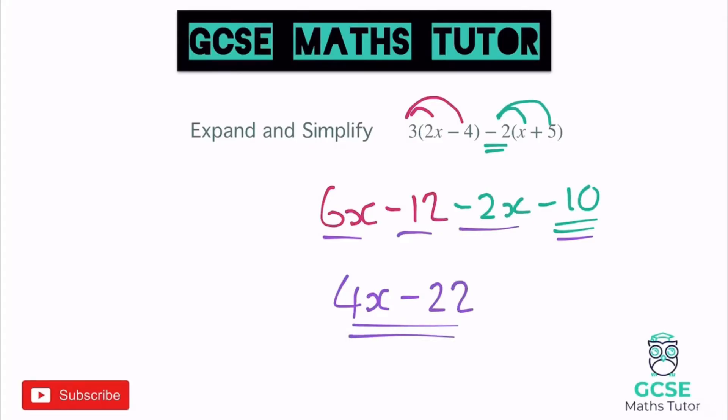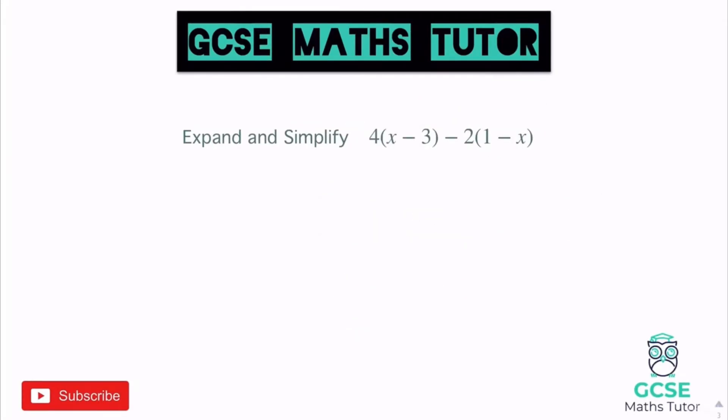Let's have a look at one more before we have a go. This one here we've got it a little bit jumbled up. It's a little bit different to the last few but let's just follow the exact same process and see what we get. First bracket four times the x gives us 4x and four times the negative three gives us negative 12.